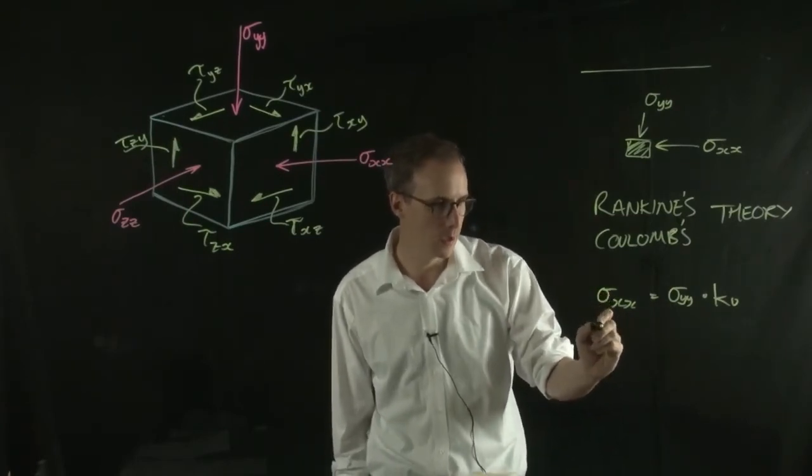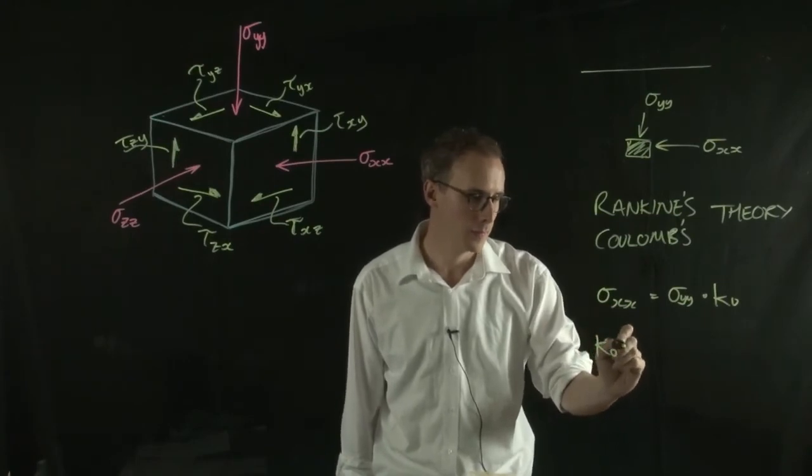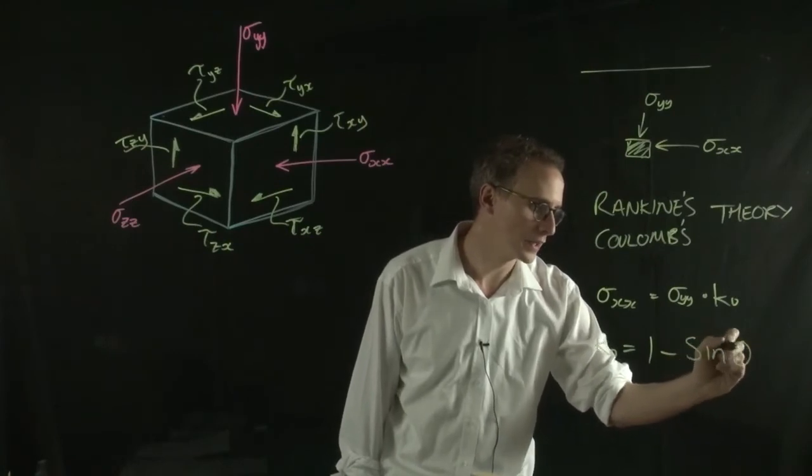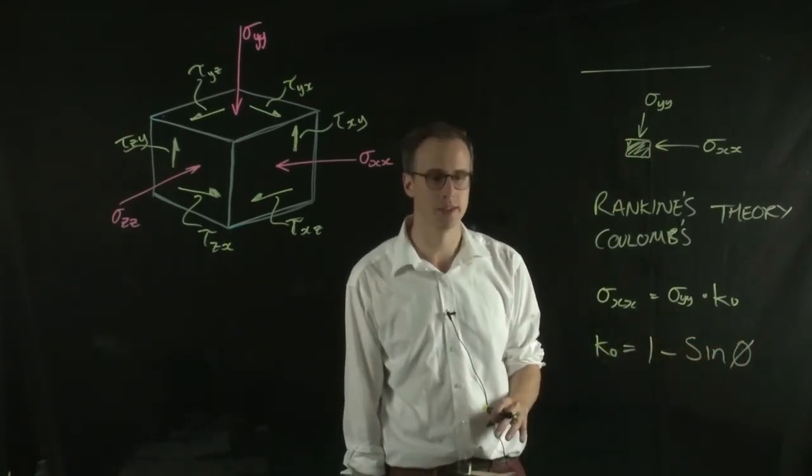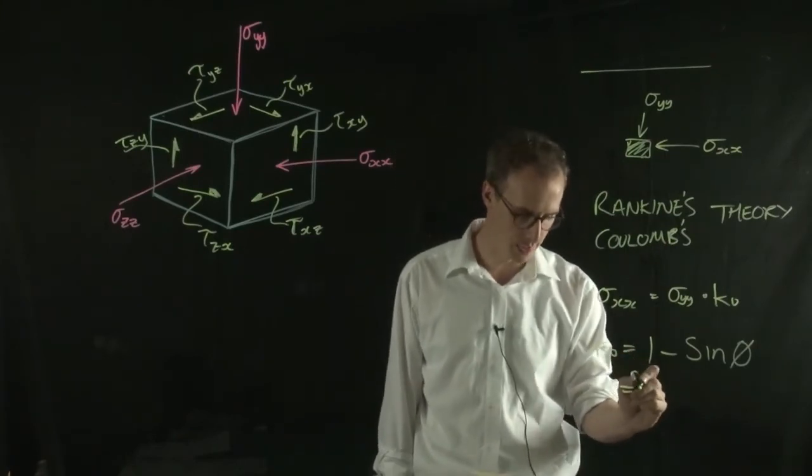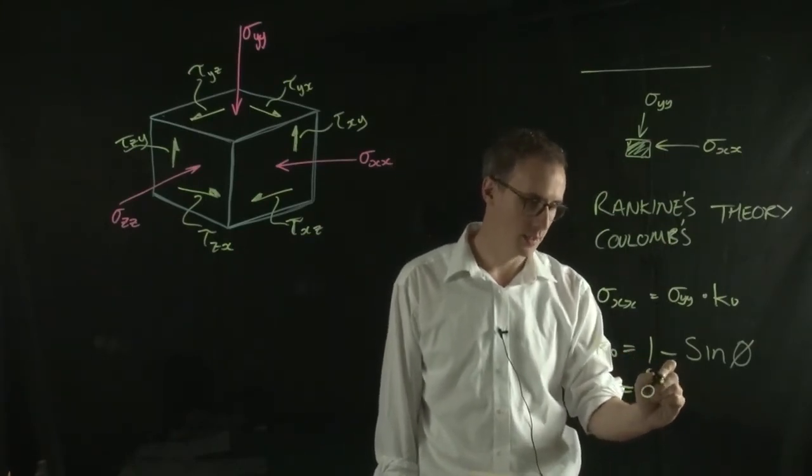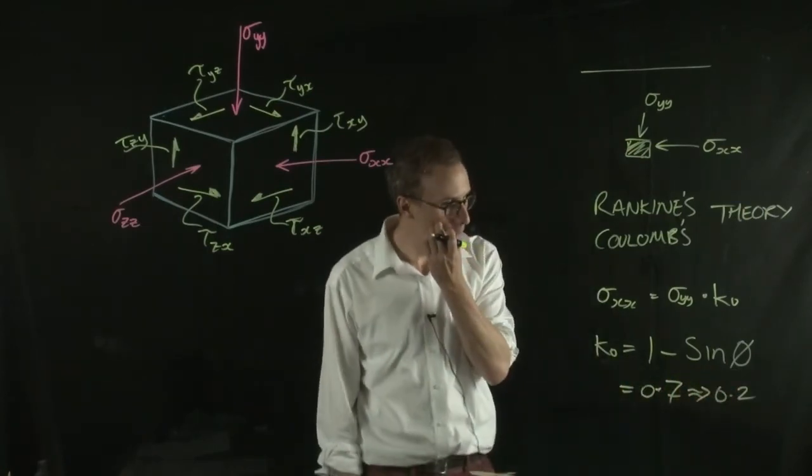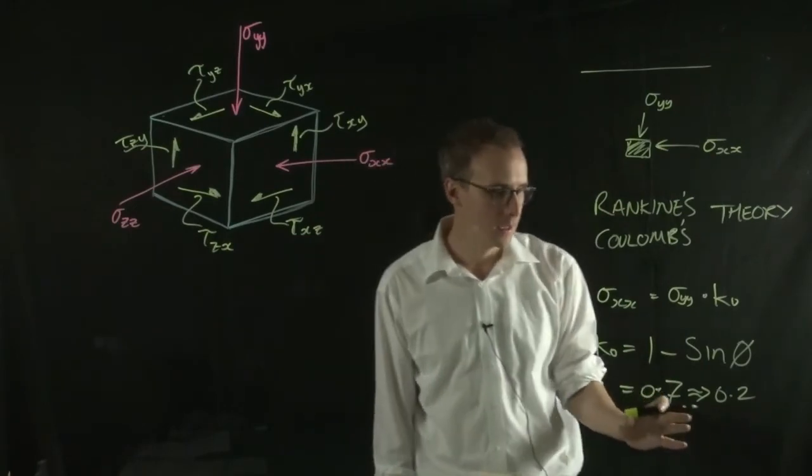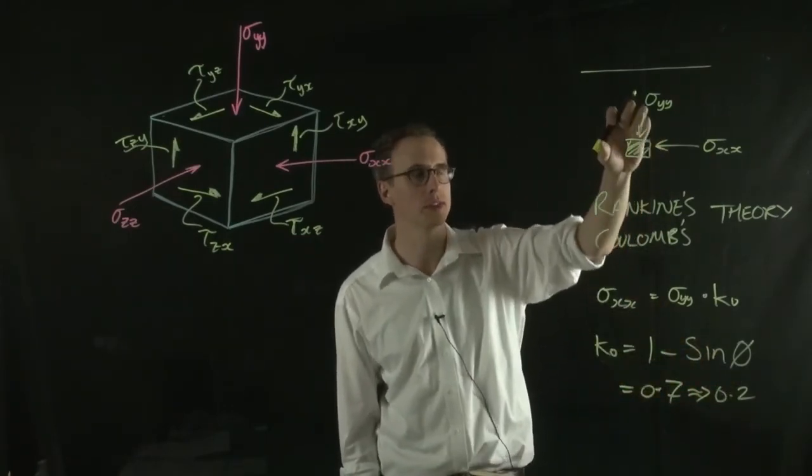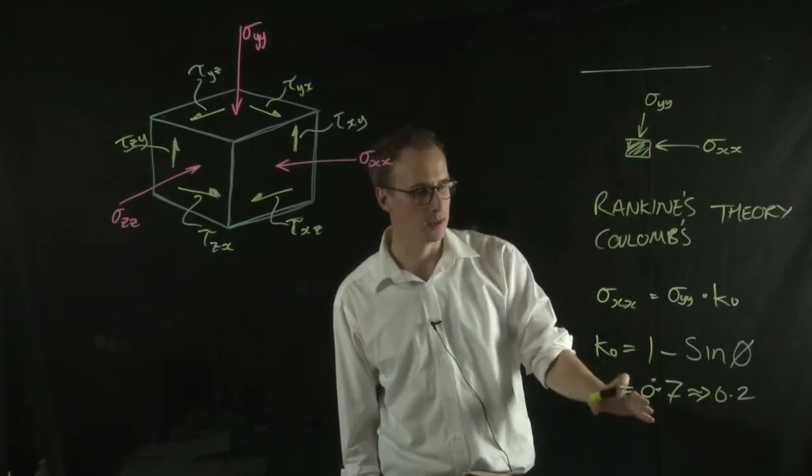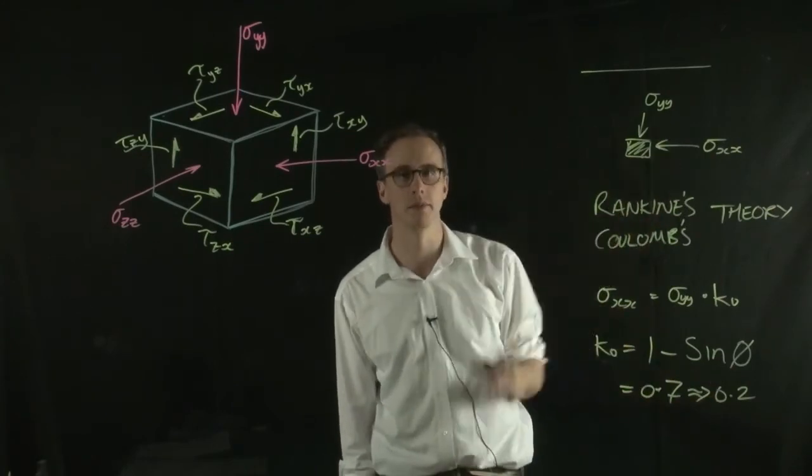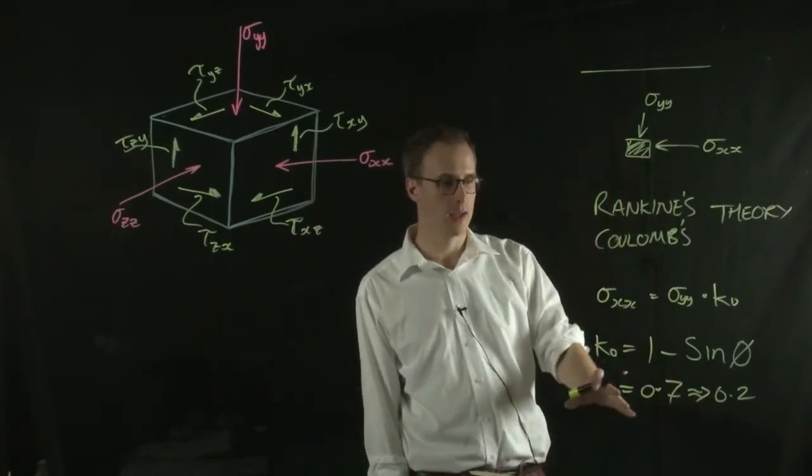The K0 is a function of the angle of friction of the soil, and we'll talk about what the angle of friction is in some later videos. But essentially it pops out at around somewhere between 0.7 and 0.2. So you can see that depending on how your soil distributes the vertical stress, the horizontal stress could be 70% or 20% of that vertical stress. So it's an important thing to consider.